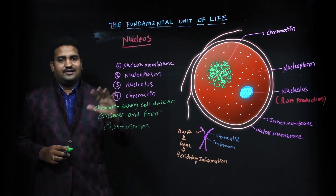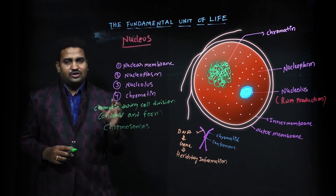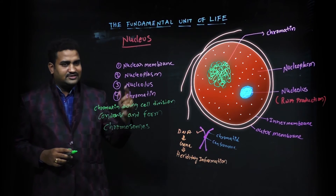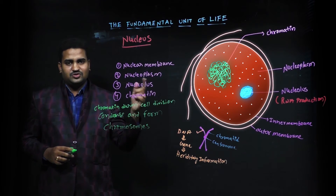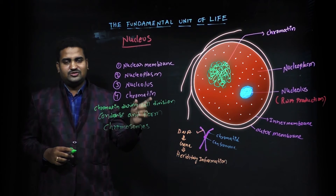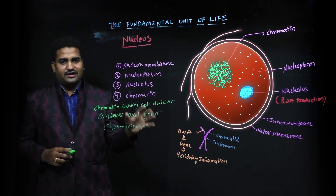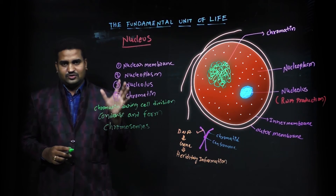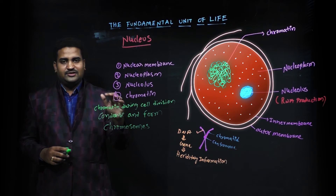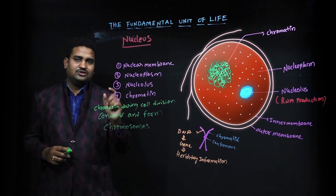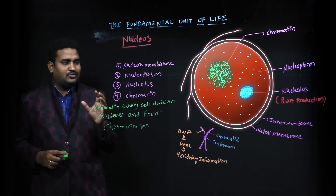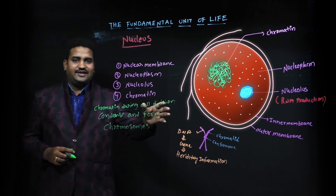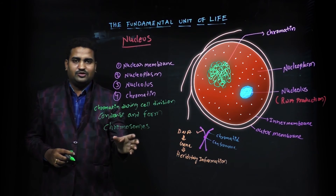So once again let us understand the structure of the nucleus. Nucleus contains nuclear membrane — the outer membrane is somewhat rough and the inner membrane is smooth. Inside it there is nucleoplasm, which is just like cytoplasm. Nucleoplasm contains nucleolus and chromatin. This chromatin is a thread-like structure, and during cell division chromatin condenses and forms the chromosome.